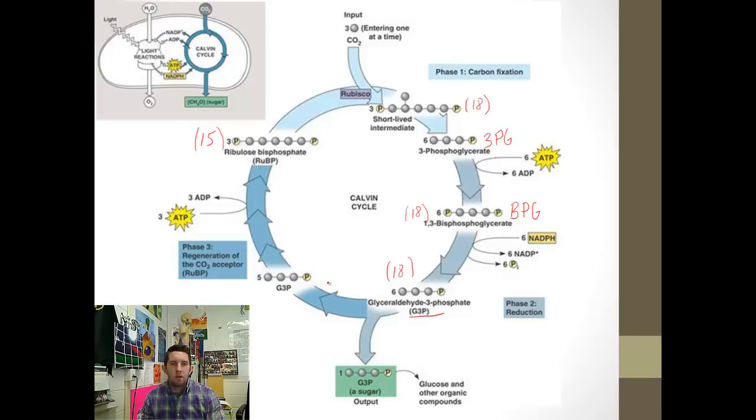One of them is going to leave and help to produce glucose or other organic molecules. Five of them continue on. Remember, we said this is cyclical. We've gone from having 18 to now we have 15. G3P can be considered half of a glucose. We had three carbons come in to produce one G3P, which is half of a glucose. Glucose is C6H12O6, six carbons. So far we have three. How many more carbon dioxides need to enter? Three more.